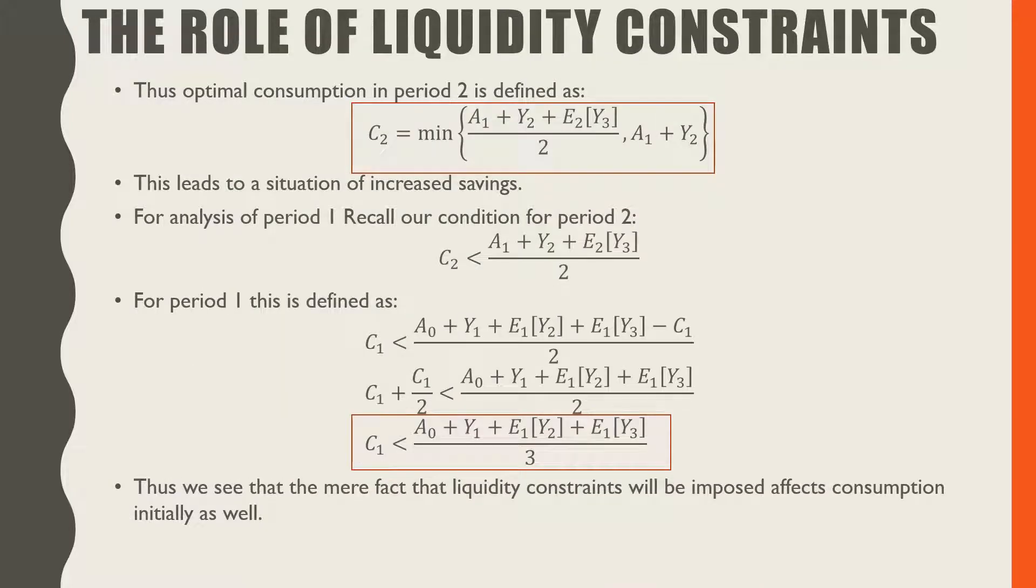From our analysis before, we find that our optimal consumption in period two is defined as this function where our consumption in period two is equal to the minimum between these two options.